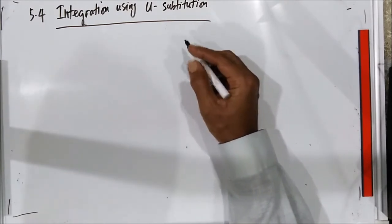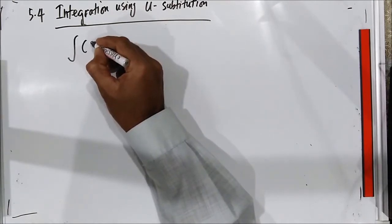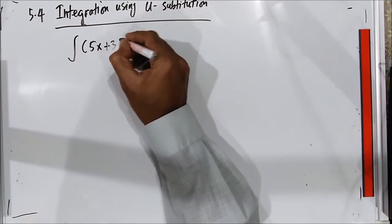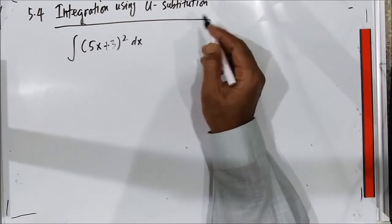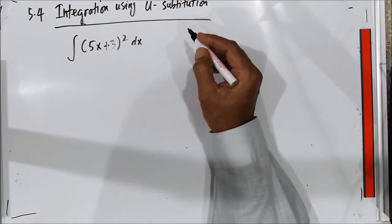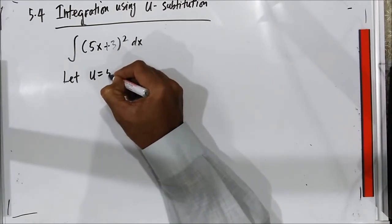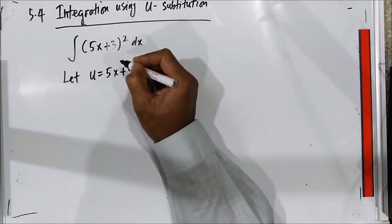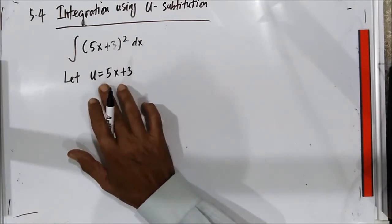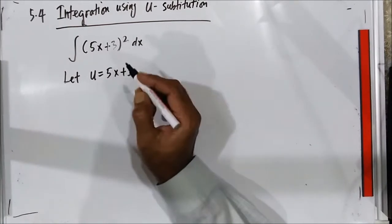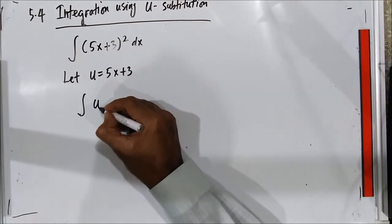We go directly to the example. If you have a case like this and you want to integrate this function, you can use U-substitution to simplify it. Let U equal to 5x plus 3.